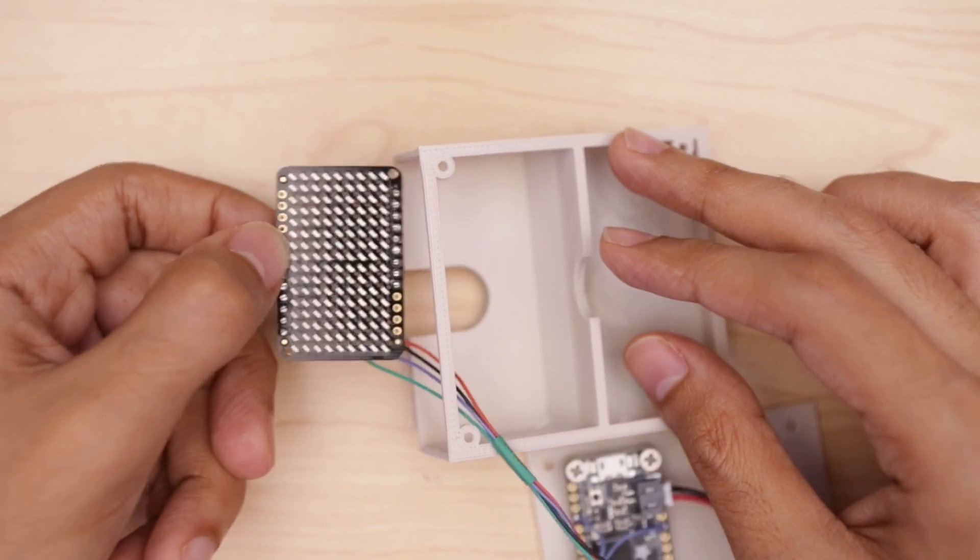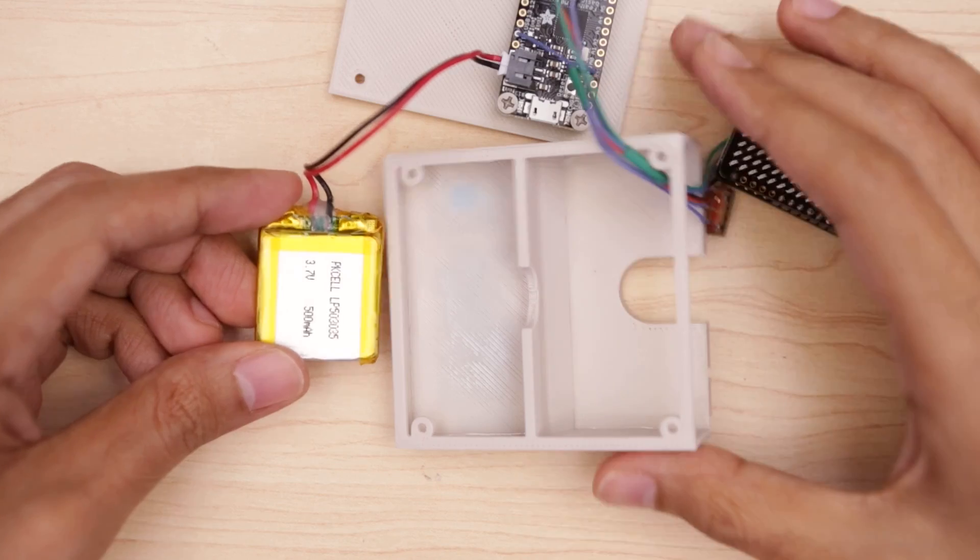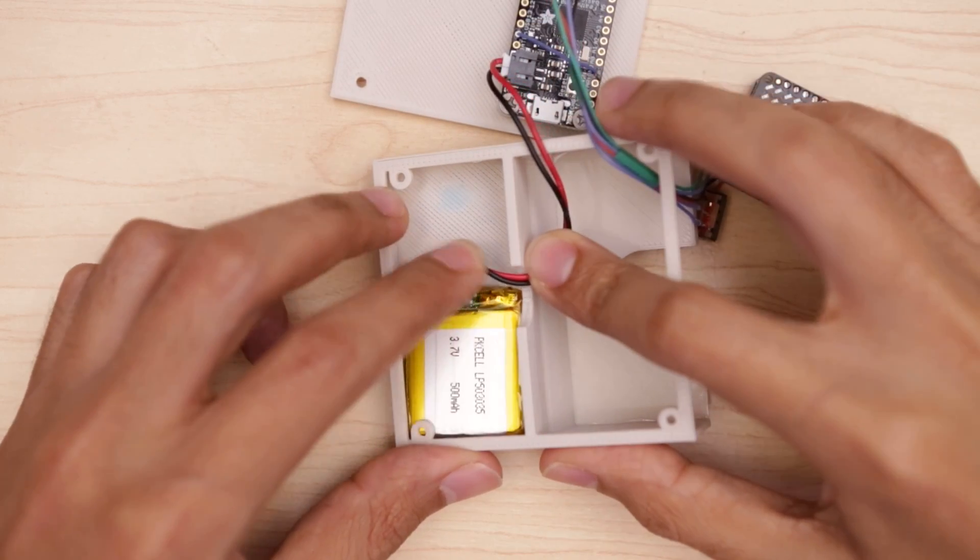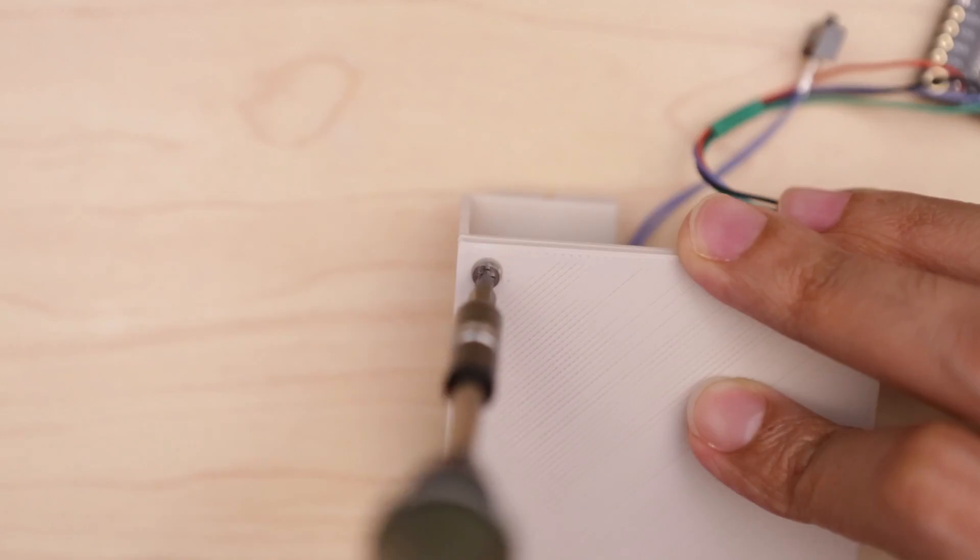We'll need to insert the LED matrix and slide switch through the bottom of the frame. Now we can place the battery into the enclosure and fit the wire through the arc. Lay the bottom cover over the enclosure frame and secure them together using machine screws.